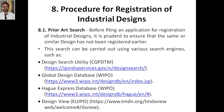There are many websites through which you can check prior art. The search can be carried out using various engines. We have CGPDTM — the Controller of Patents, Designs and Trademarks — which we discussed in previous classes. We also have WIPO, the World Intellectual Property Organization, which provides access to the Global Design Database and Hague Express databases.